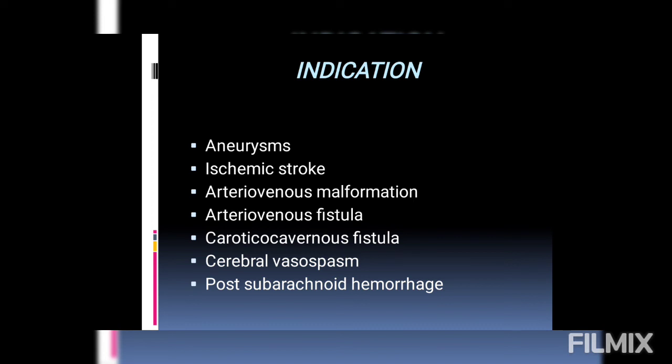Then we have cerebral vasospasm. When there is hemorrhage in the brain, the blood can irritate the blood vessel walls, leading to narrowing of the blood vessels, which can ultimately lead to stroke — which we know is a blockage of blood vessels.